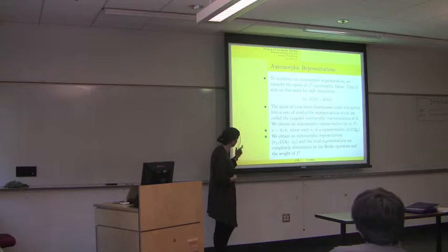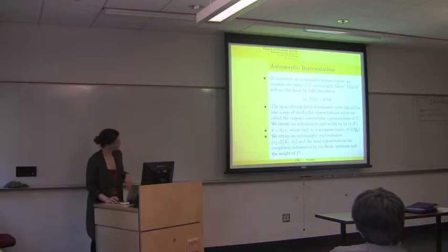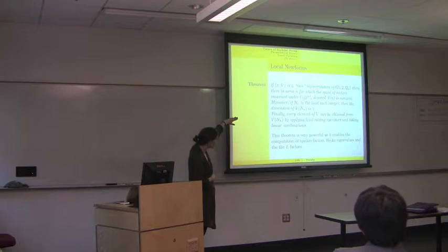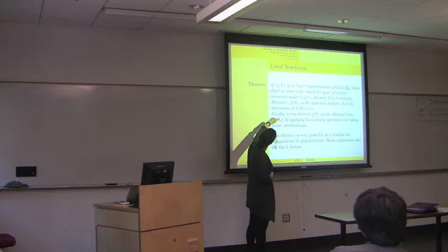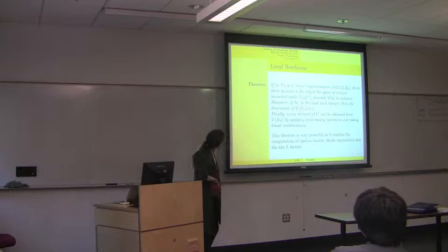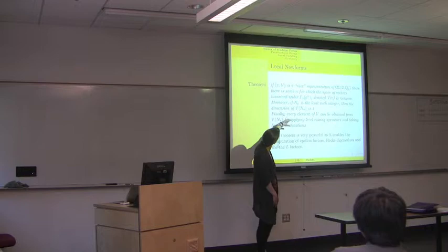We're going to work locally. If I have a nice representation — irreducible, admissible — then there's some n for which the space of vectors invariant under Γ₀(p^n) is non-zero. If n_π is the least such integer, I'm going to call that the conductor of my representation.